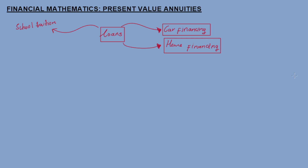As far as getting a loan approved, you approach the bank. Maybe your parents need to help — for example if you need to go to university and can't afford it, your parents can approach a financial institution like a bank to borrow money to put you through university. There are different reasons for taking out a loan: for business, financing a car, or when you need more money than you currently have.